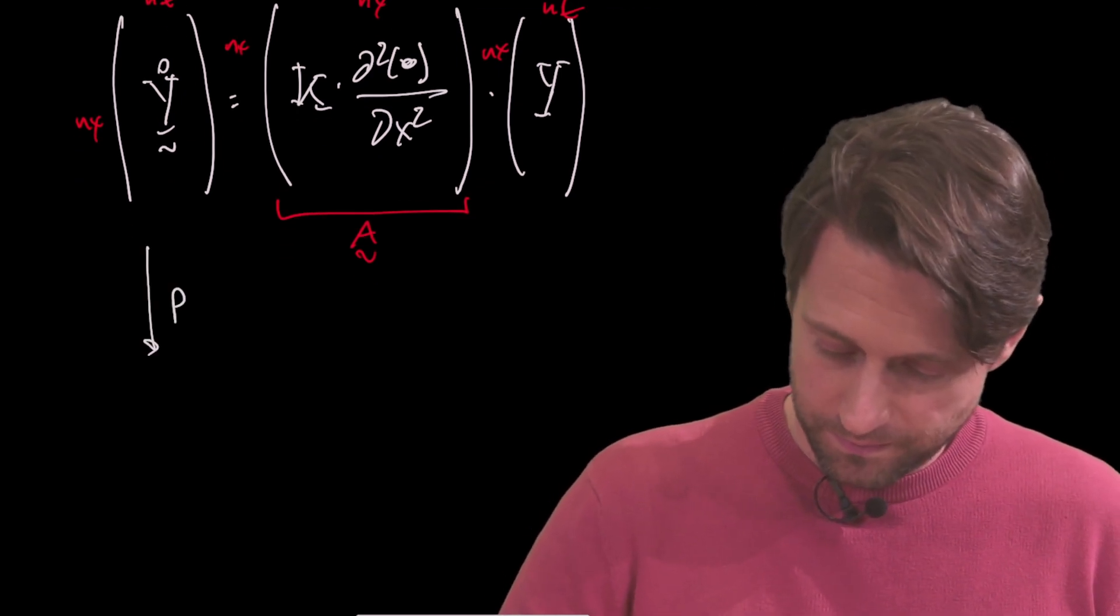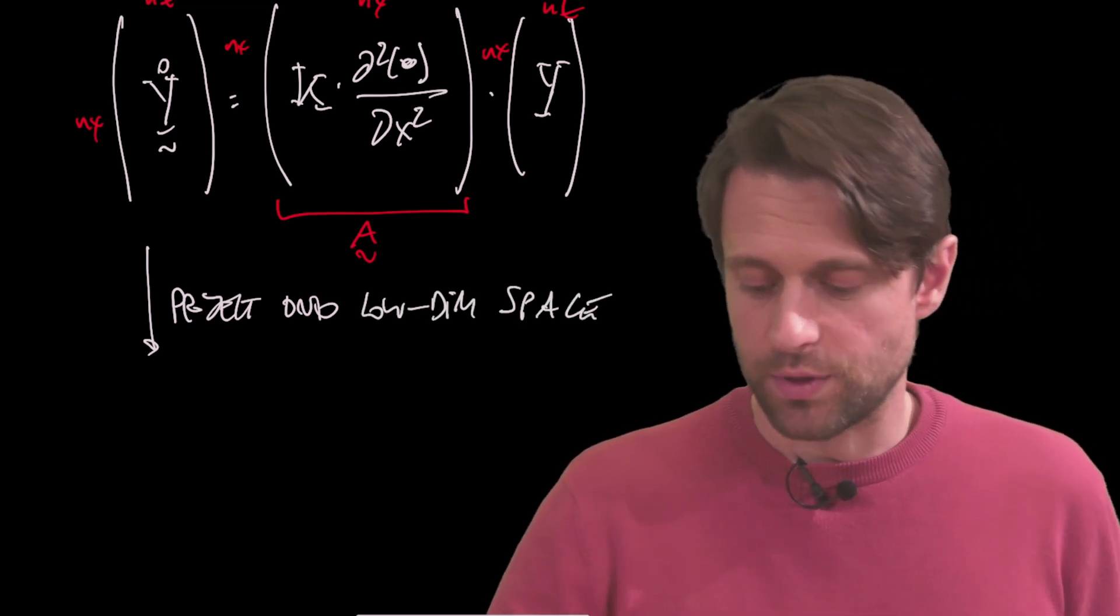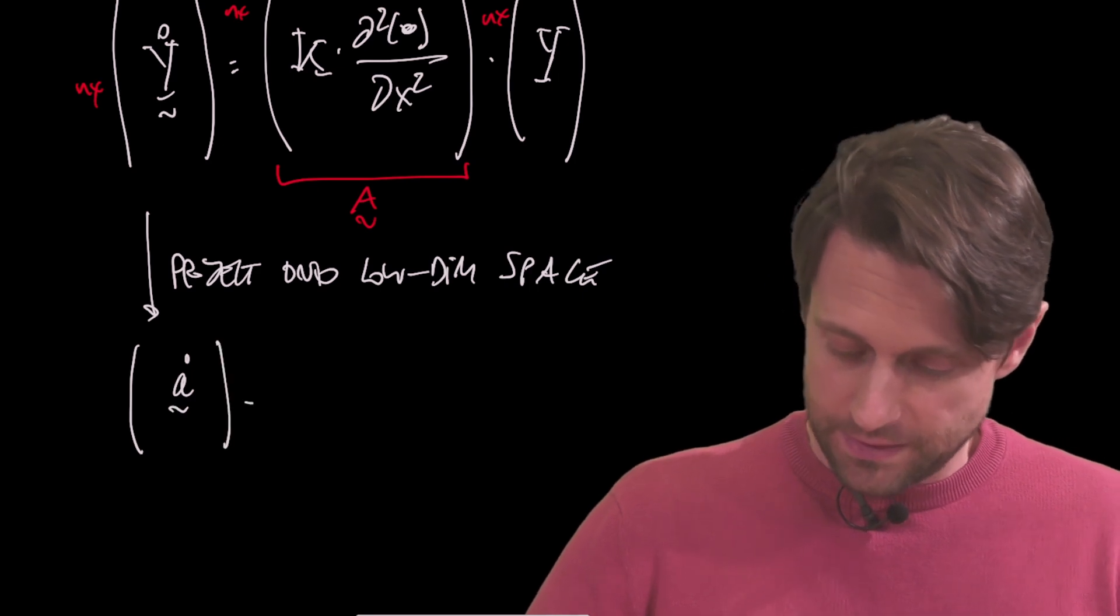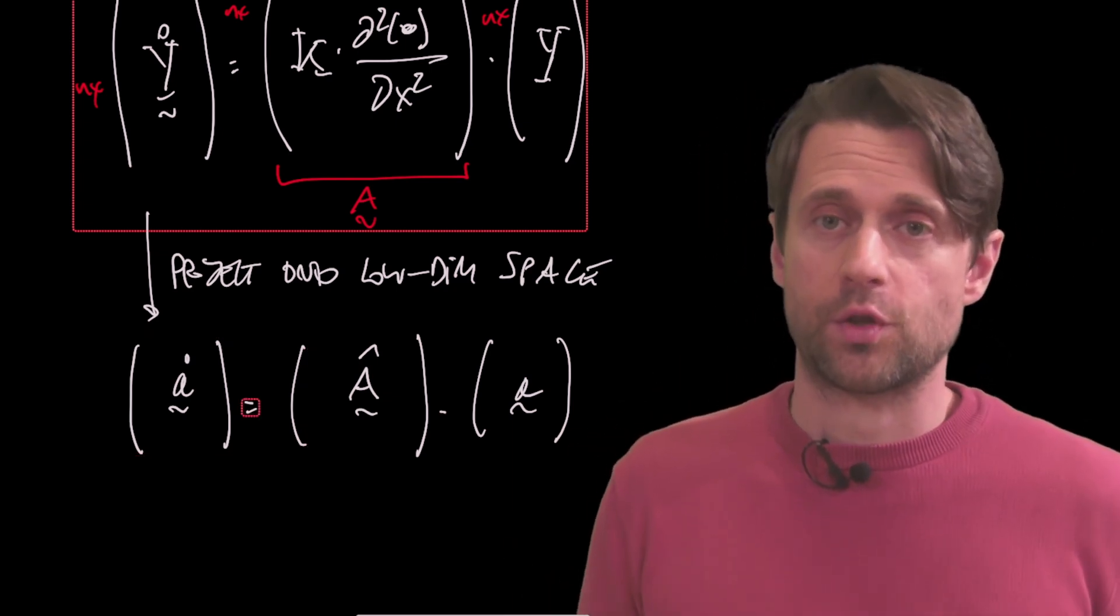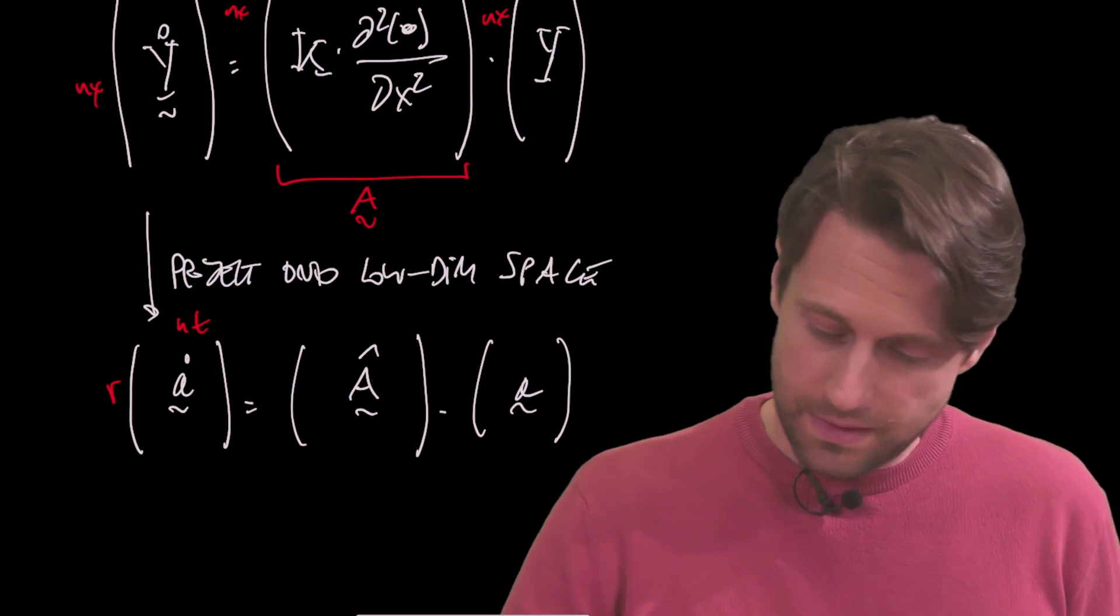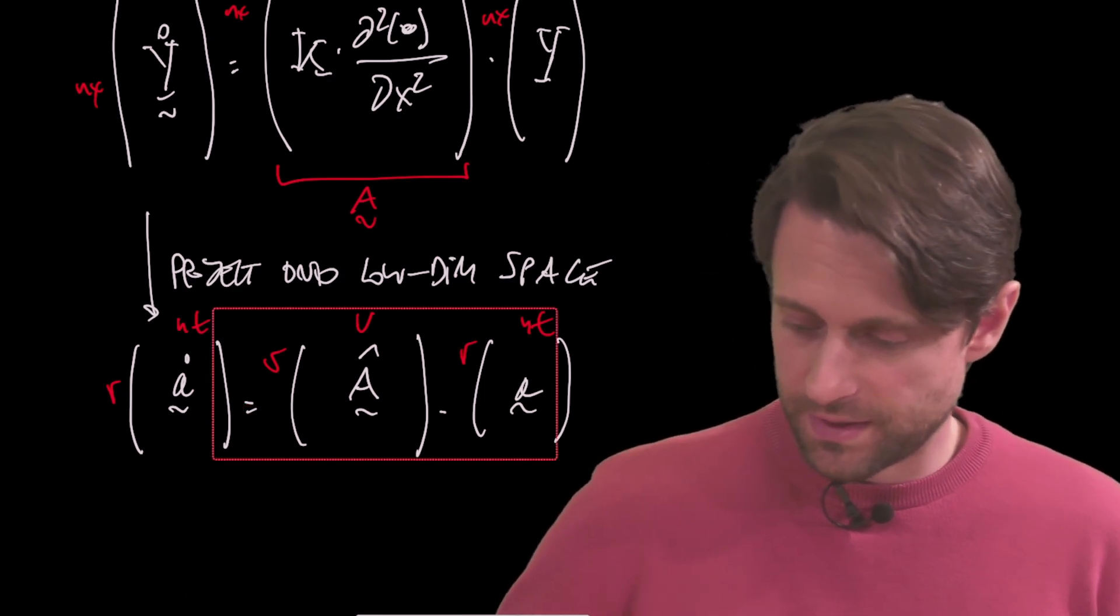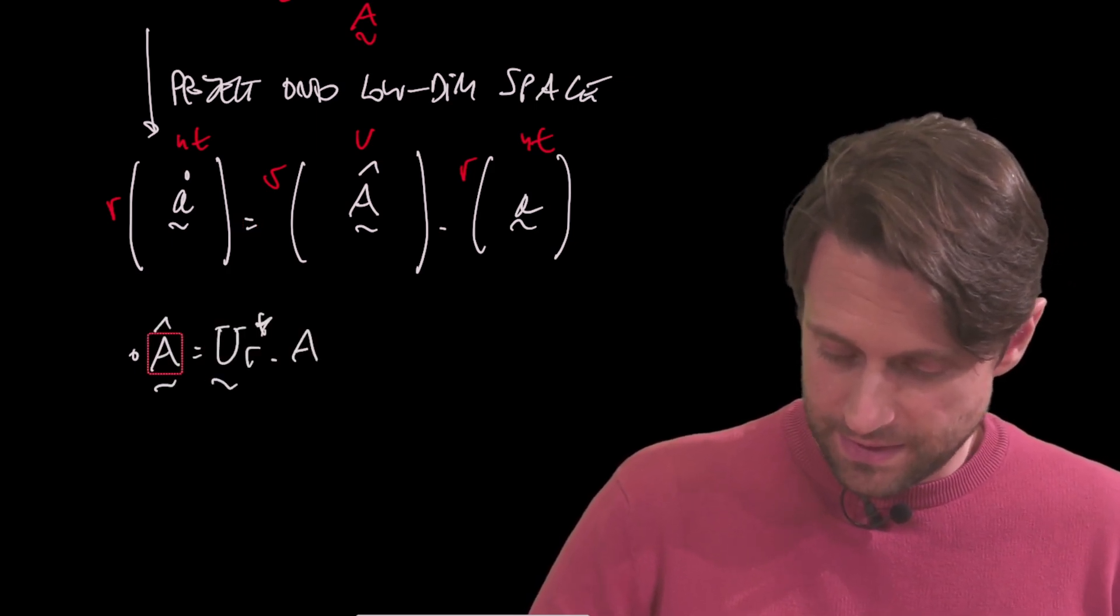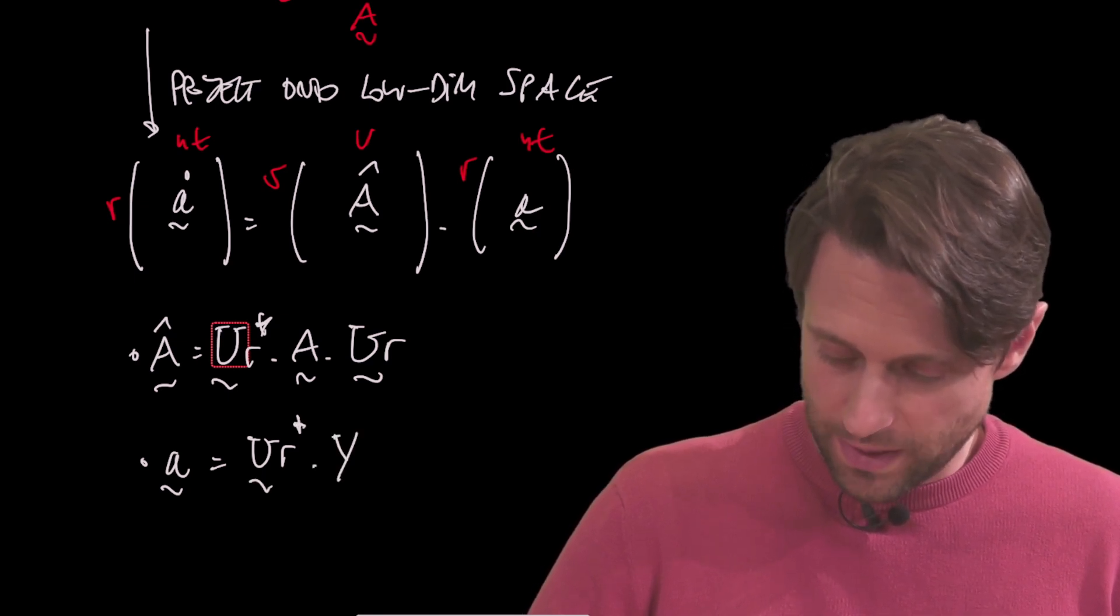So we project onto a low-dimensional space, and I project with my U_R matrix. So I will end up with something like this: a_dot is going to be equal to my A_hat matrix multiplied by a. This is basically the state in the low-dimensional space, so the reduced state. So what I have here in practice is R by n_t. I also have here R by n_t, and this is R by R. Where, if we remember from the previous video, the application of this example to the diffusion equation, A_hat would be equal to U_R star times A times U_R, and a, which is the low-dimensional system, would be U_R star times Y.